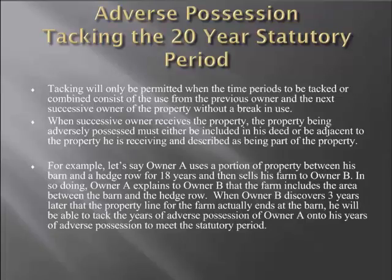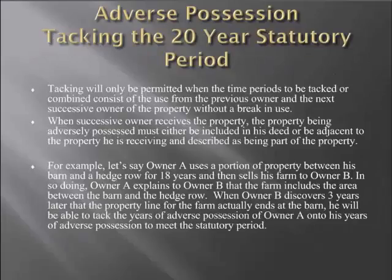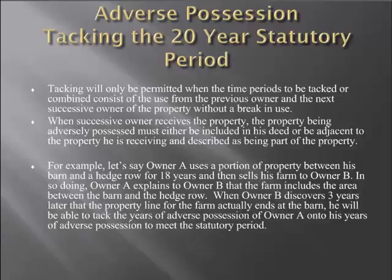Deed descriptions are repeated deed after deed after deed and can contain many errors — a mistake is often just carried through owner after owner. So your best bet, if you're buying a piece of property and you're unsure of the property lines, is to get a survey done. A surveyor is the only one who's going to be able to tell you where your true property lines are.